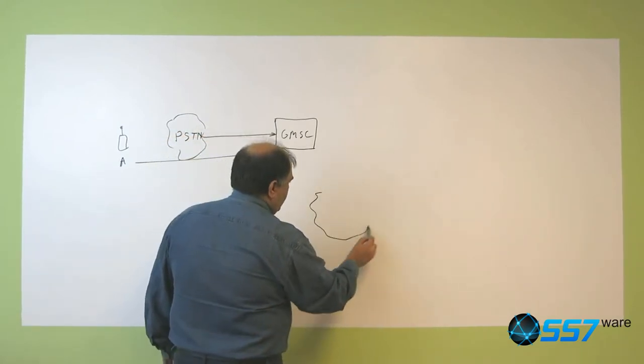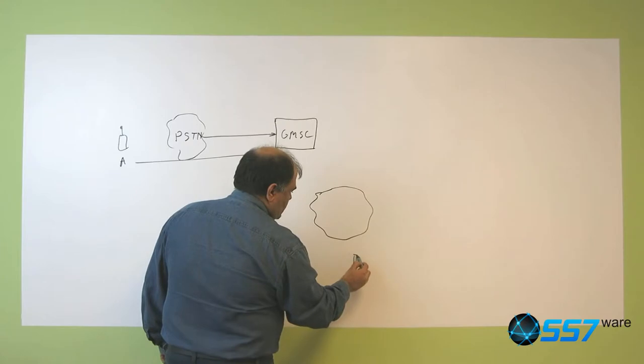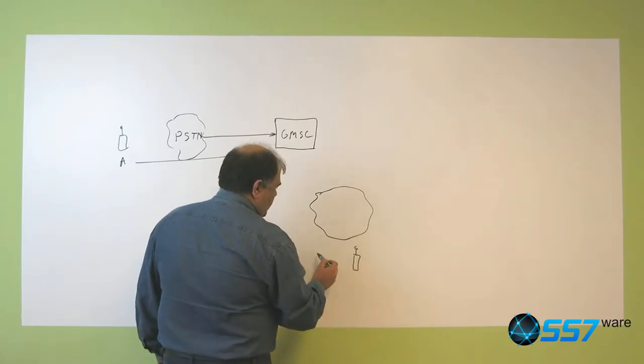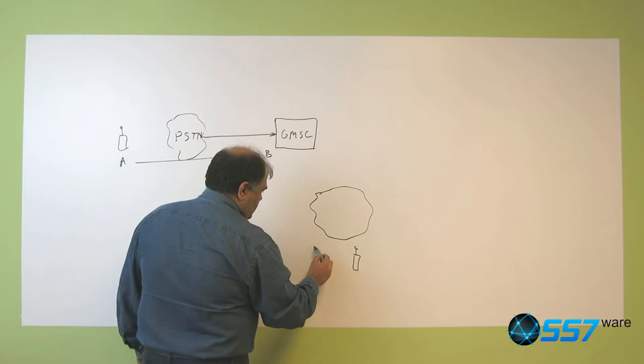So we have the telephony network here. The subscriber happens to be here attached to a VLR MSC, let's call it V.